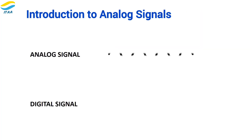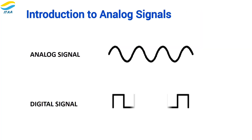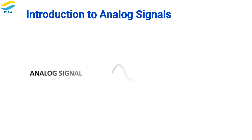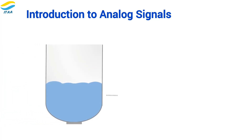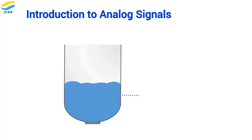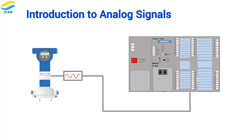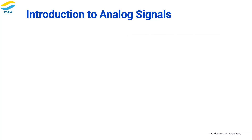Let's begin with a quick look at analog signals. Unlike digital signals, which are either on or off, analog signals represent a continuous range of values. Take a tank level for instance — it's not just full or empty, but could be anywhere in between, like 3 meters or 7.5 meters. Analog signals capture this range, giving us more precise data for better process control.